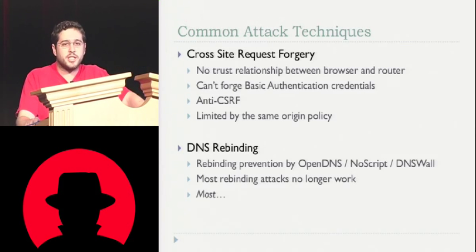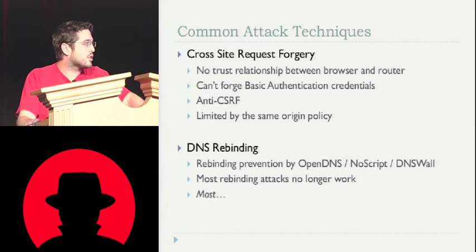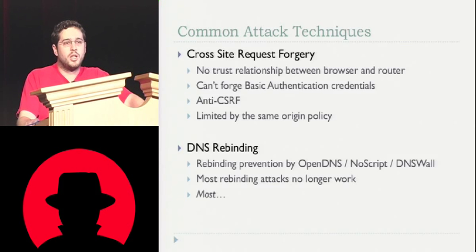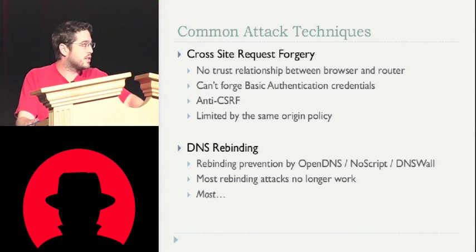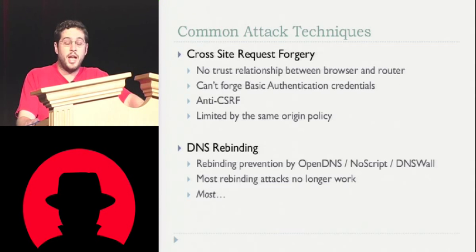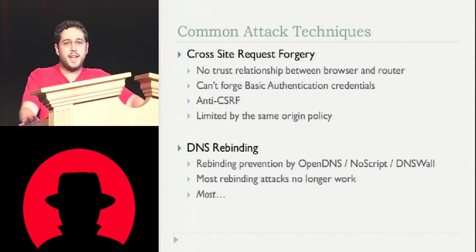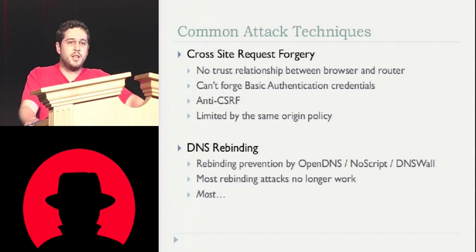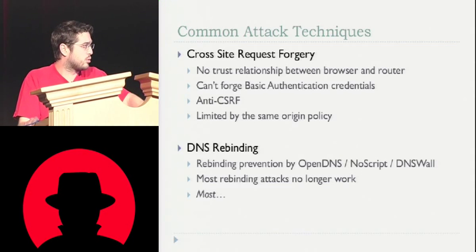Browsers have put in patches, and third-party plug-ins have put in patches. You also have services and tools like OpenDNS, NoScript, DNS Wall. DNSMasq also has some anti-rebinding stuff in it. These all attempt to stop people from using DNS rebinding to attack your internal network. The way they do that is they say no external domain should resolve to an internal RFC 1918 non-routable IP address, because if it does, you're probably not going to be able to connect to it anyway, and if they're doing something malicious, we want to block it.